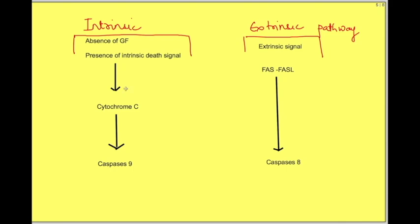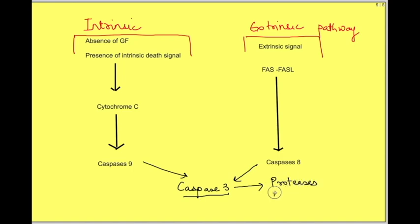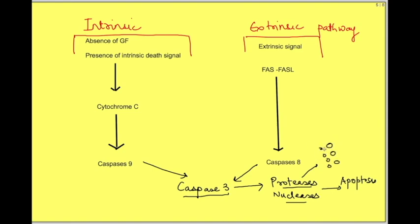Despite both pathways involving different mechanisms and proteins, ultimately both lead to activation of the common effector caspase-3. Caspase-3 leads to activation of other proteases and nucleases, which ultimately lead to apoptosis. Proteases cut down various cytoskeletal proteins maintaining cell shape — like microtubules, microfilaments, and intermediate filaments — and nucleases break down the nucleic acid. Without DNA, the cell cannot survive, and because of these proteases and nucleases, the cell starts forming blebs which fall off and are recognized by macrophages.